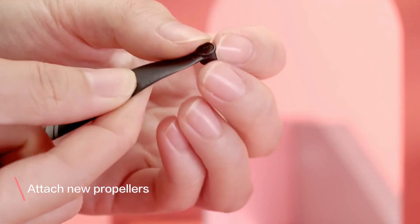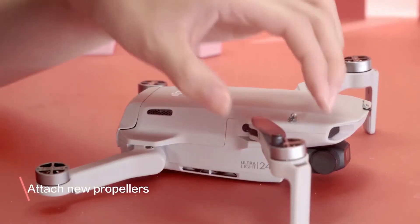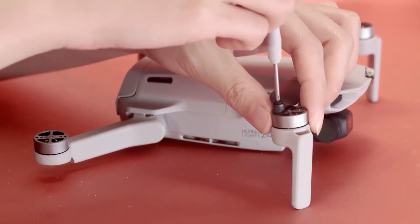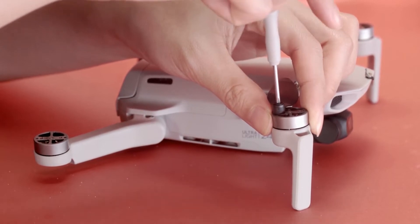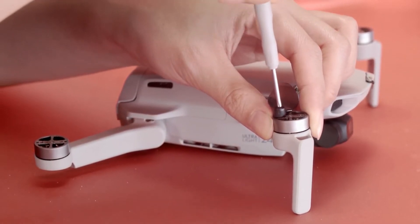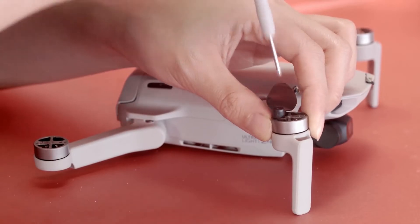Place the new screws into the screw holes of the propeller and insert the screwdriver into the screw's cross-recesses. Align the screws properly and rotate the screwdriver clockwise until the screws are secure.